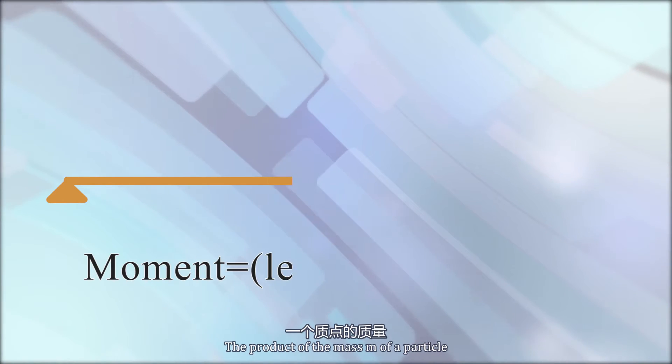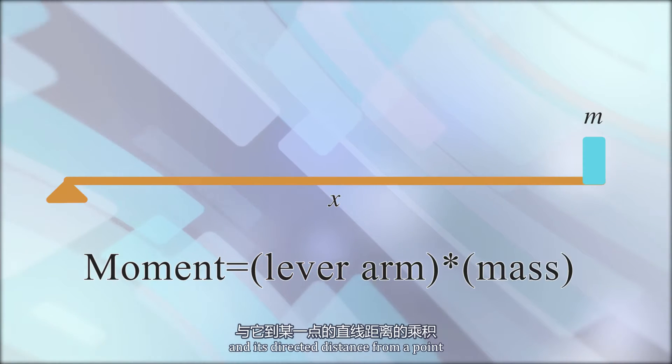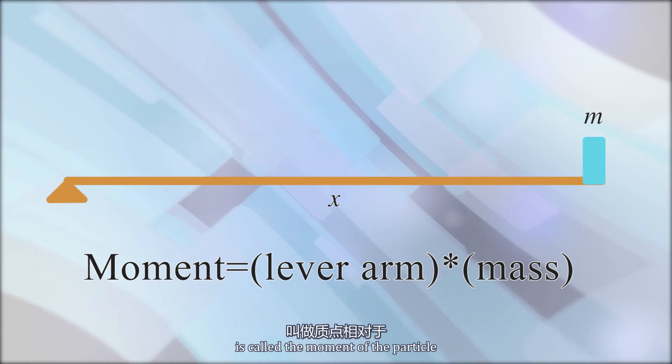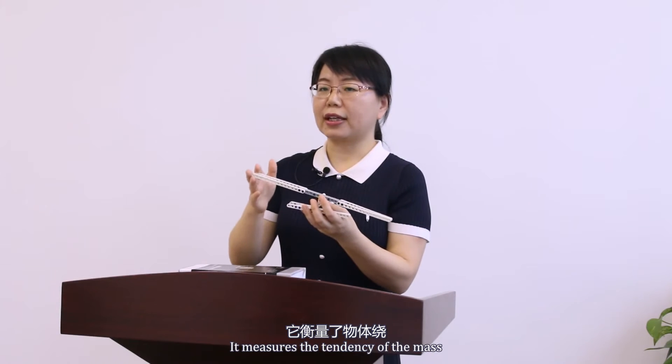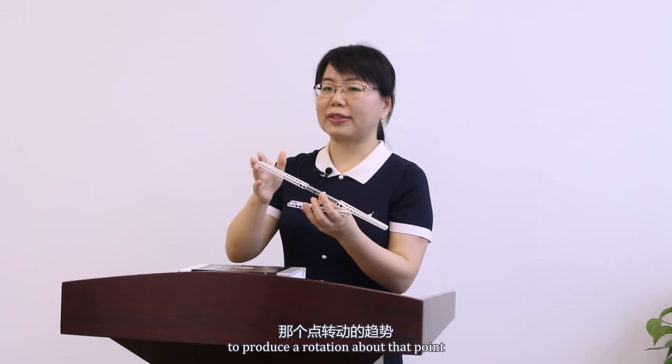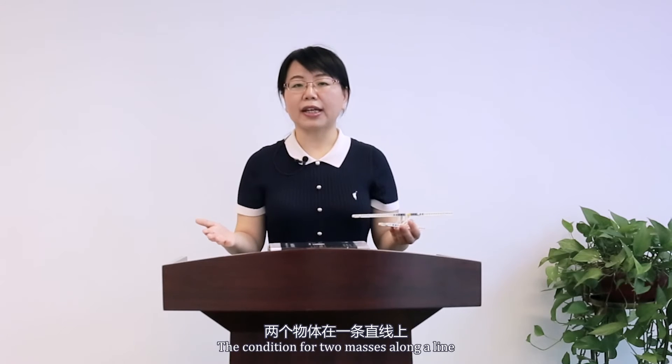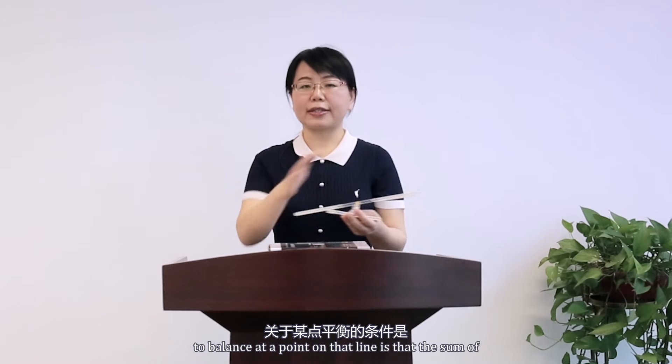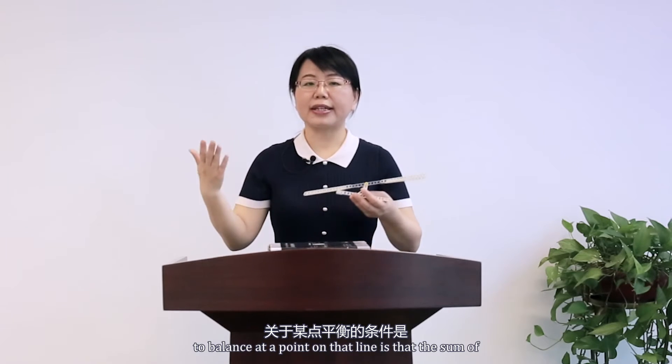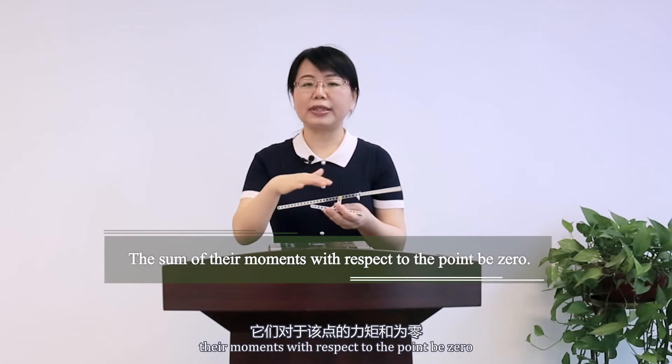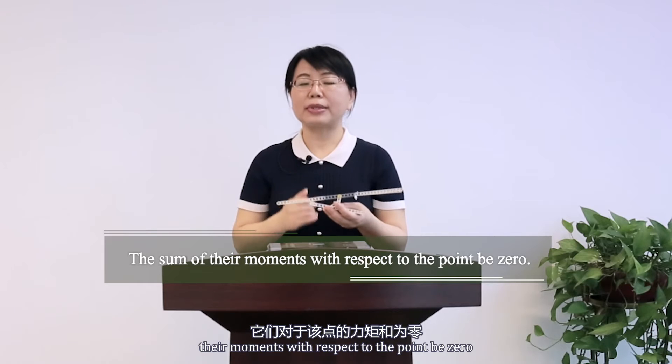The product of the mass of a particle and its directed distance from a point is called the moment of the particle with respect to that point. It measures the tendency of the mass to produce a rotation about that point. The condition for two masses along a line to balance at a point on that line is that the sum of their moments with respect to the point be zero.